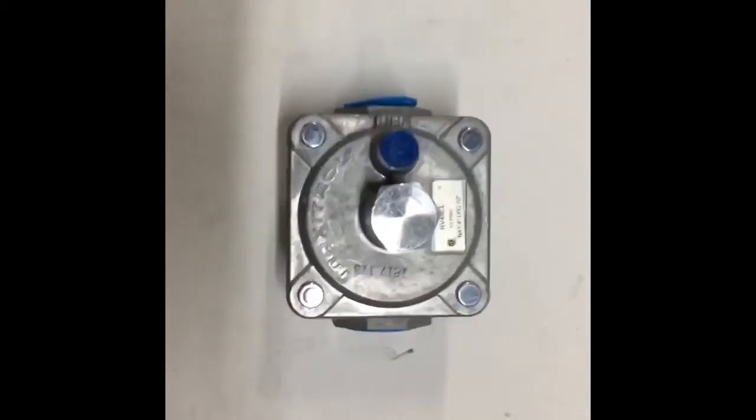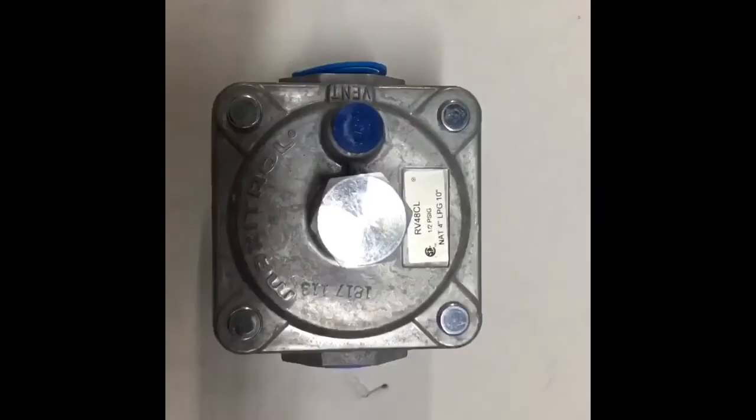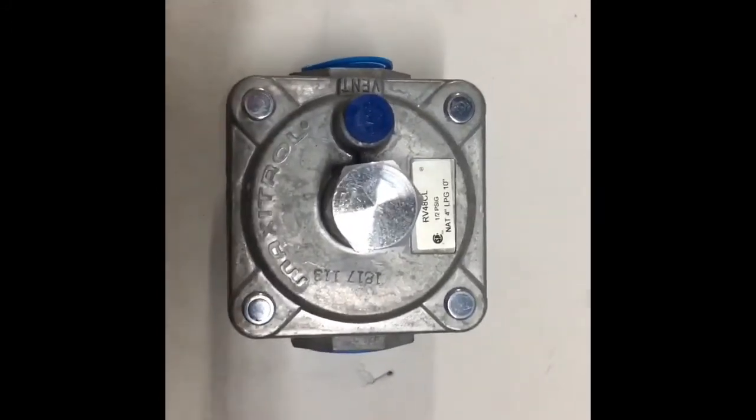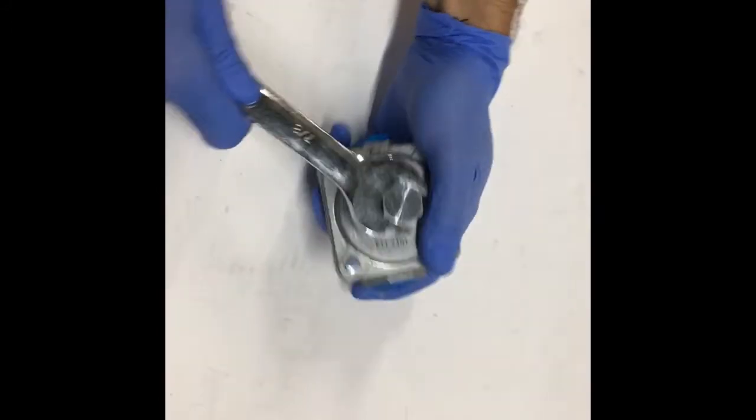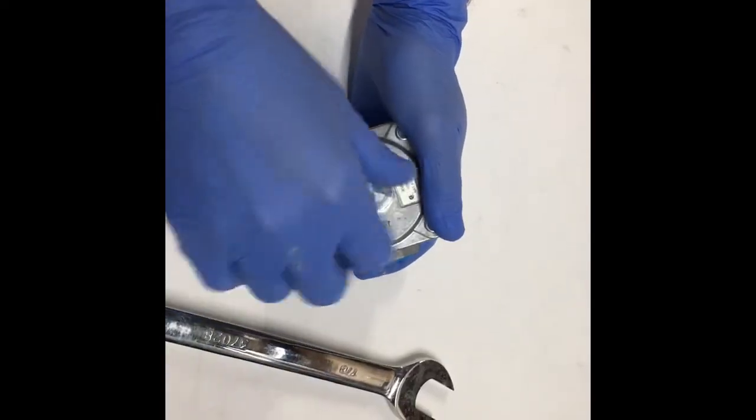Appliance regulators are only convertible when they have a hexagon shaped cap at the top of them. A circle cap will be preset for natural gas and cannot be converted. Take a wrench,